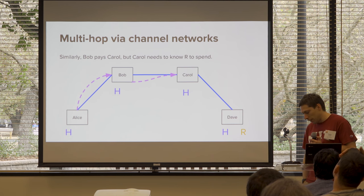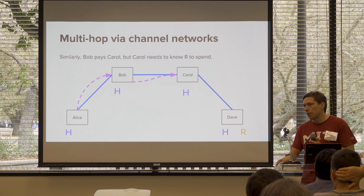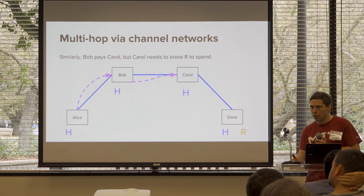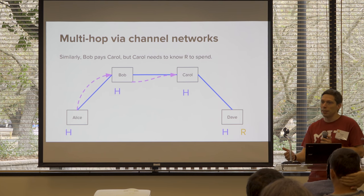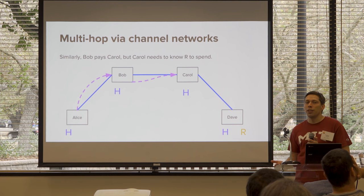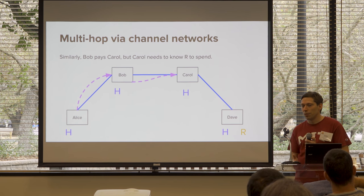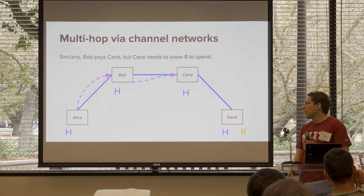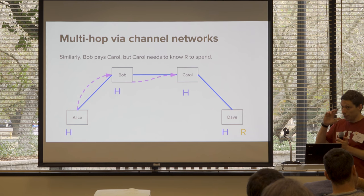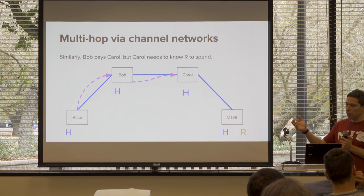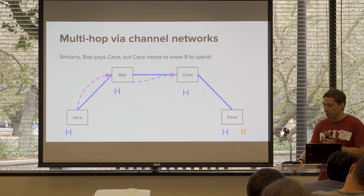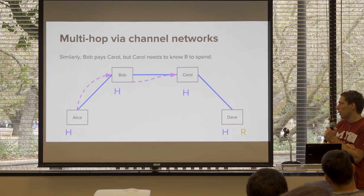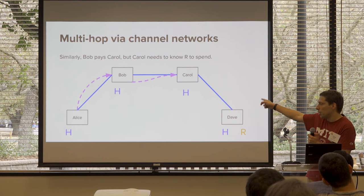Regarding timing risk: if you broadcast but the transaction is still in the mempool, the clock doesn't start ticking until it's confirmed in a block. All the time locks are based on block height. There are two different types of time locks: relative time locks relative to when a transaction is confirmed, and absolute time locks based on an absolute block height. Generally in these HTLCs you'll use absolute block height for the expiry of contingent payments.